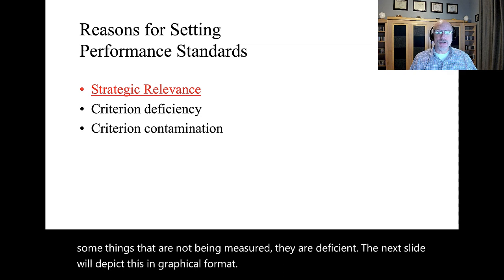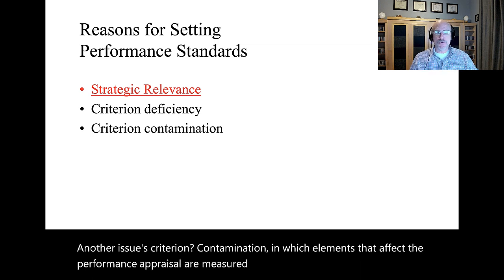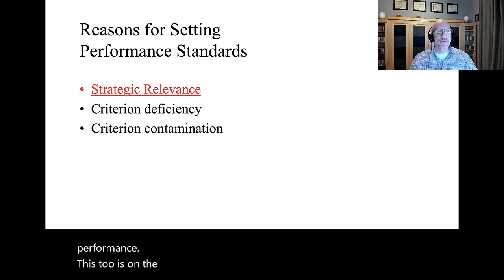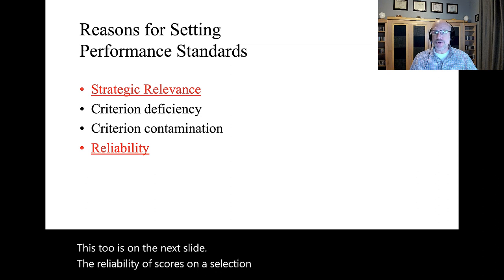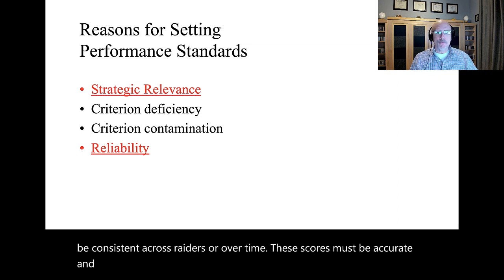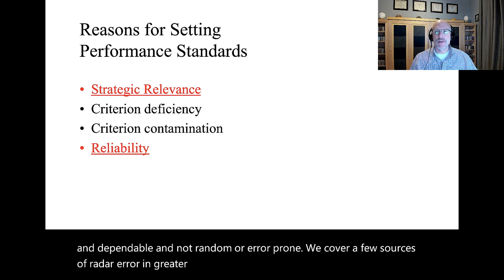Another issue is criterion contamination, in which elements that affect the performance appraisal are measured, but they are not part of the actual performance. The reliability of scores on a selection test or a performance measure must be consistent across raters and over time. These scores must be accurate and dependable and not random or error prone. We cover a few sources of rater error in greater detail later in this lecture.